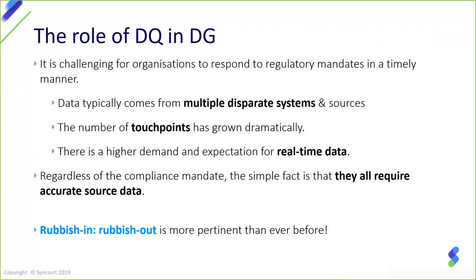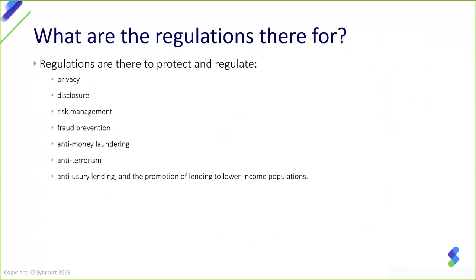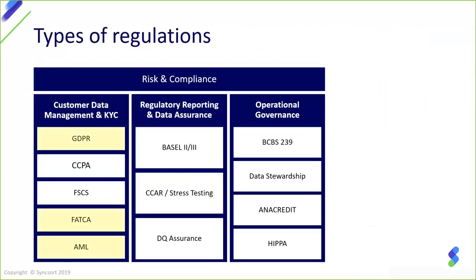The bottom line is all of these facets demand that the source data is accurate. That old adage of rubbish in, rubbish out — or garbage in, garbage out — is more pertinent than ever. We all know what the regulations are for, so I won't go through them in detail. They're there to protect privacy and disclosure, risk management, fraud prevention, anti-money laundering and terrorism, and so on. There's a huge variety of types of regulation depending on the industry. The most pertinent to Europeans at the moment is GDPR, which came in ten months ago, and there's a similar one coming in America now — CCPA. In financial services you've got FSCS, FATCA, AML, Basel. In healthcare, it's HIPAA and so on.